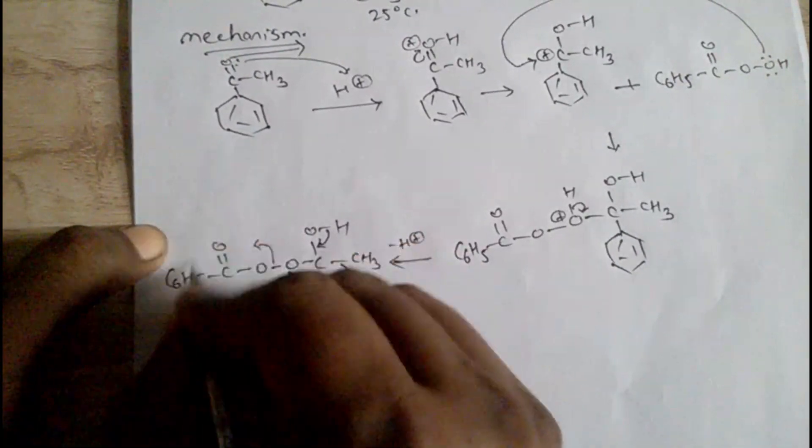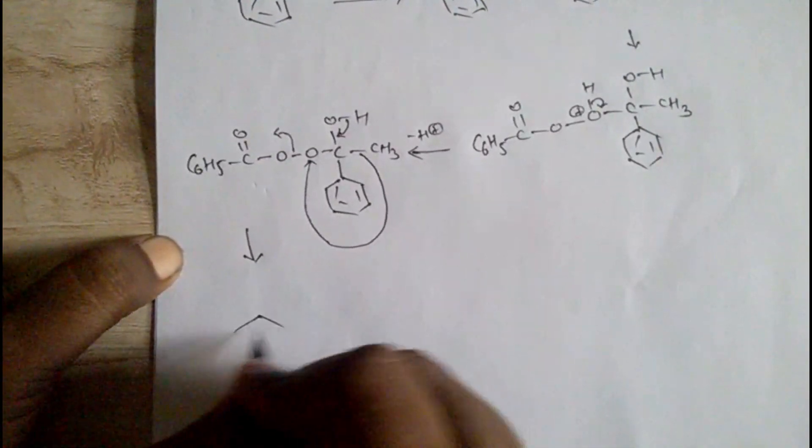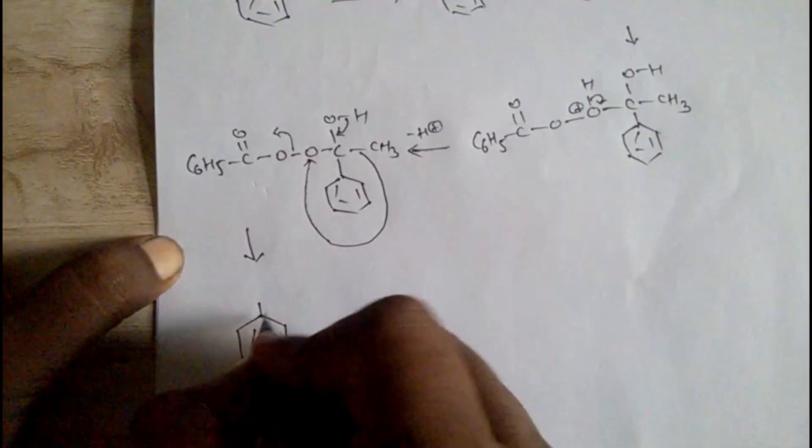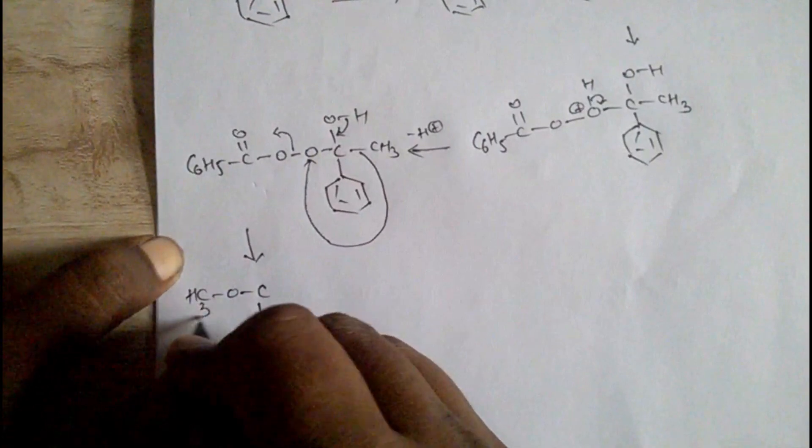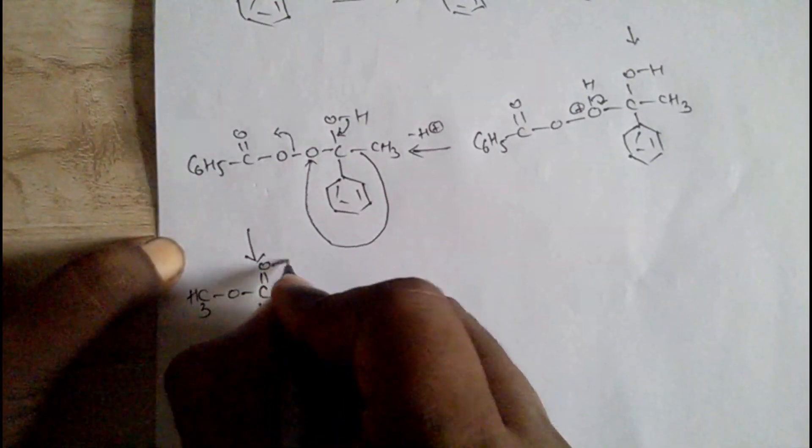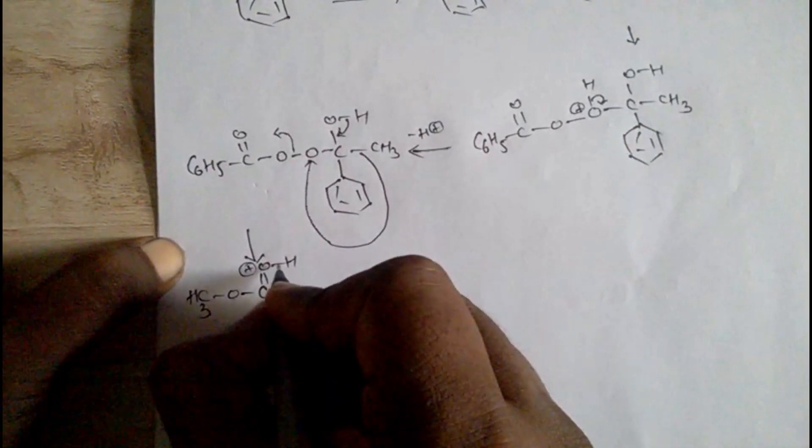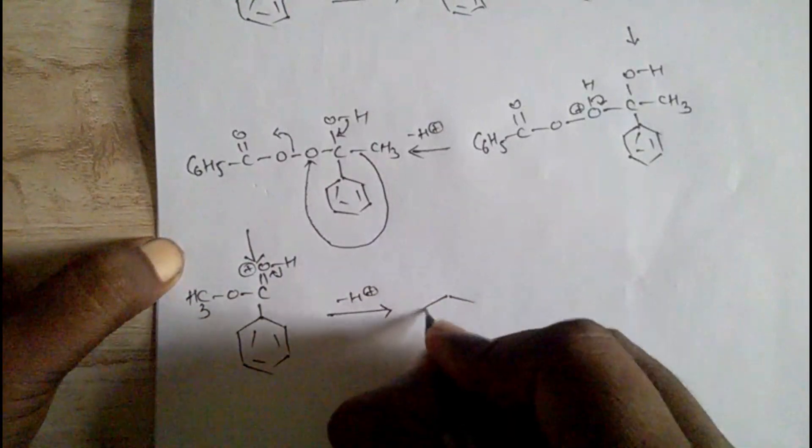And this bond, this group leaves and we get a product C O C O O 3 here oxygen. And this oxygen got a positive charge. In this step this bond will shift towards oxygen and H plus will release and we get a ester.